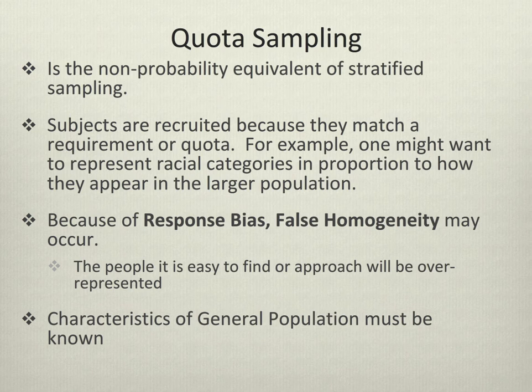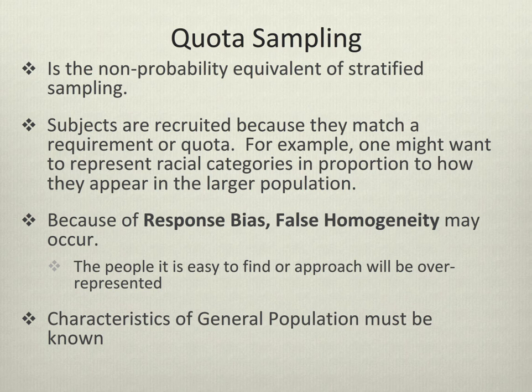Quota sampling is the non-probability equivalent of stratified sampling. In quota sampling, you recruit subjects to fill a particular quota. For example, you might want to represent racial categories in proportion to how they appear in the larger population. The important thing to remember about quota sampling is that you're trying to match something about your sampling population to the larger population — you're not just picking out particular people. With quota sampling, you want to be careful of response bias, because you may get what is called a false homogeneity effect — the people who are easy to find and fill your quota will be over-represented, as opposed to people who are more difficult to locate.